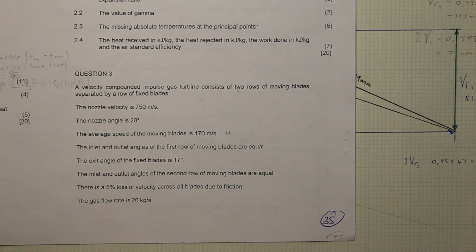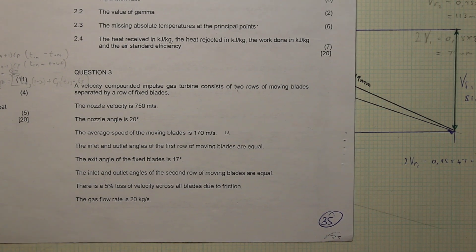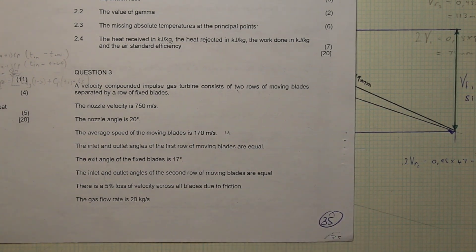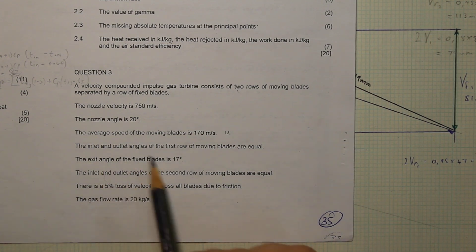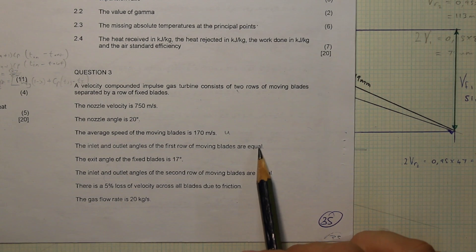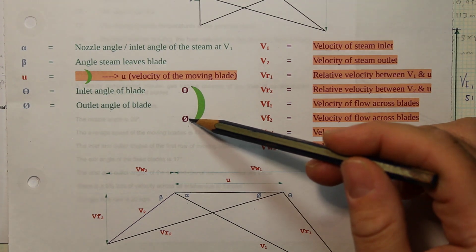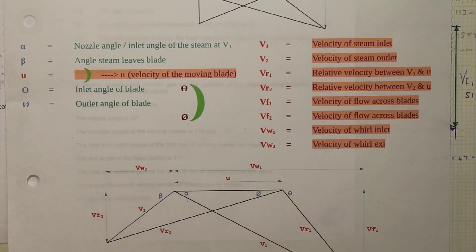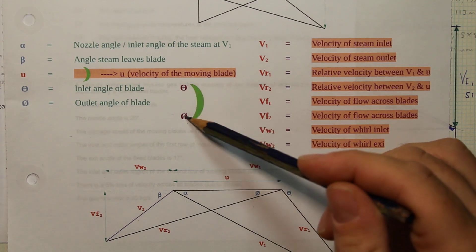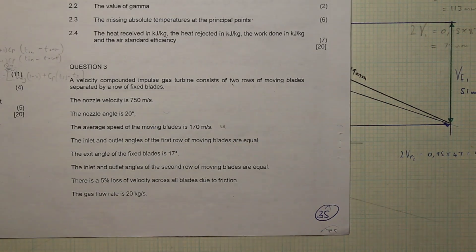Normally we'd have to calculate blade speed using U equals π·D·N over 60 from the diameter and RPM, but here they give it to us directly. They also state that the inlet and outlet angles of the first row of moving blades are equal, meaning theta equals phi for the first row. So whatever angle we find on one side, we know the other — that makes things easy.